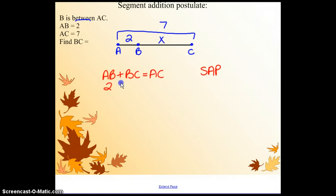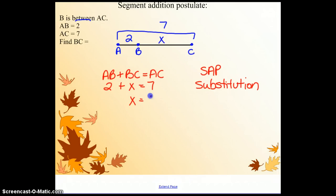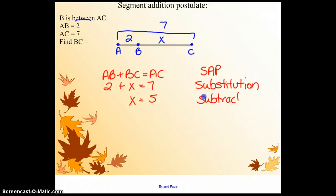Substitution would allow 2 plus X to be equal to 7. Never abbreviate substitution because it could be confused with subtraction. Then our next step by the subtraction property, we're going to subtract our 2 and get a 5. Very easily, I'm sure you guys did that as mental math.